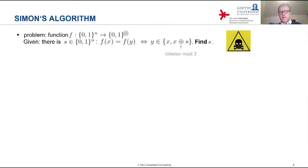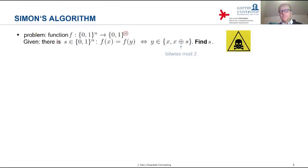If we don't find two different arguments giving the same function value, we have to keep trying until we've tried half the possible arguments plus one more. If no two of them gave the same value, then we know the function must be 1-to-1 and s must be zero. So in the worst case we have to try 2 to the power n/2 plus one arguments — we have to evaluate the function that many times until we can be sure about the value of s.